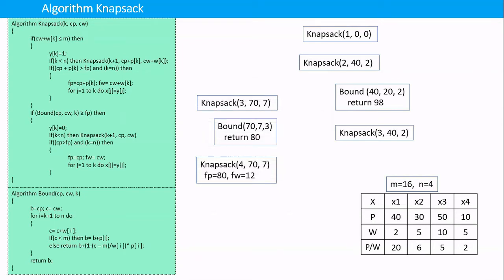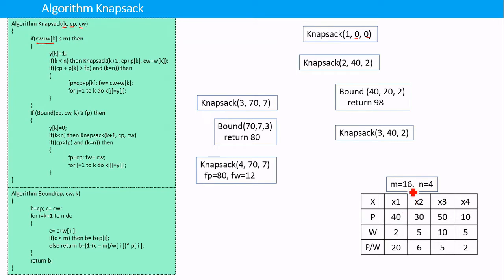This is the algorithm for the 0/1 Knapsack problem. The algorithm takes the current item, current profit, and current weight as input. It is a recursive algorithm. Initially we call knapsack(1, 0, 0), where 1 is the current item and 0 is both the current weight and current profit. We check whether adding the weight of item 1 to the current weight is less than or equal to the knapsack capacity. The weight of item 1 is 2, and adding it is less than or equal to 16, so we set y[k] = 1.